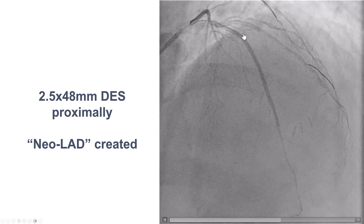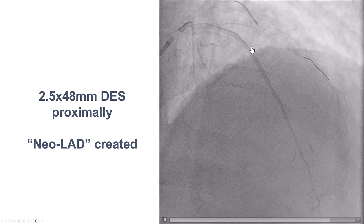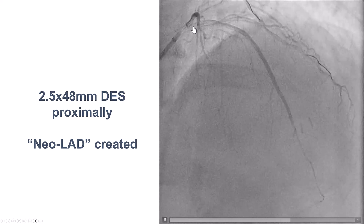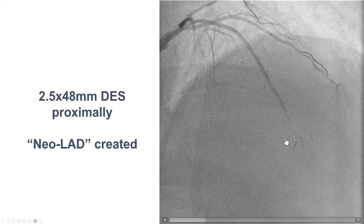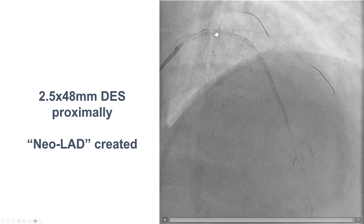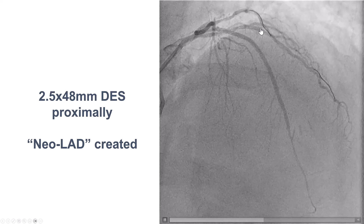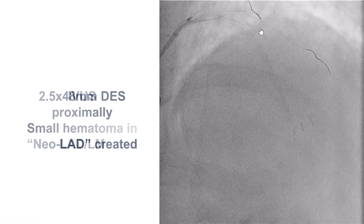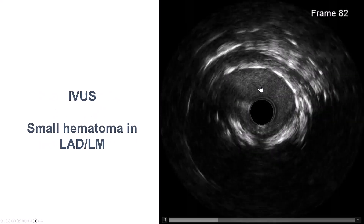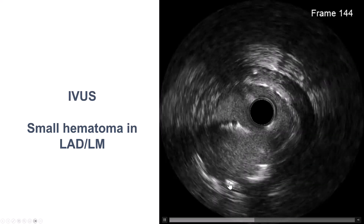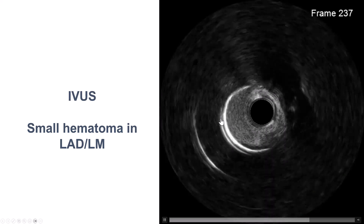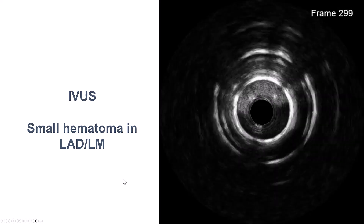Essentially, we have flow coming all the way from the proximal LAD, just distal to the left main bifurcation, all the way to the distal LAD. We did not affect flow into the diagonal branch. On intravascular ultrasound, there was potentially a small hematoma into the left main, but overall the vessel looked pretty good.